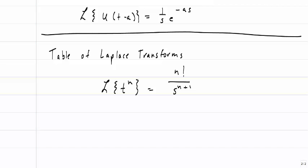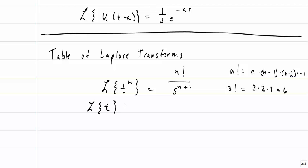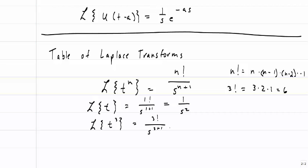I'll be giving you a table of Laplace Transforms on the exam. One such item on the transform list will be: the Laplace Transform of t to the n is equal to n factorial divided by s to the n plus 1. N factorial is simply n times n minus 1 times n minus 2, all the way down to 1. So 3 factorial, for instance, is 3 times 2 times 1, or 6. The Laplace Transform of t would be 1 factorial divided by s to the 1 plus 1, or 1 over s squared — exactly what we found before. The Laplace Transform of t to the third power would be 3 factorial divided by s to the 4, or 6 over s to the fourth.